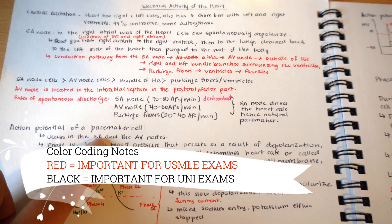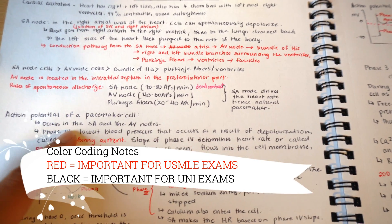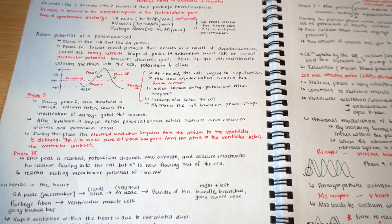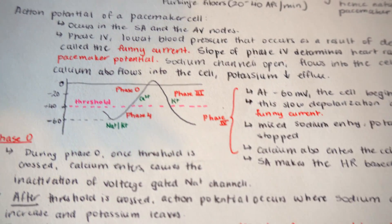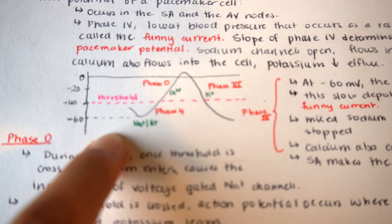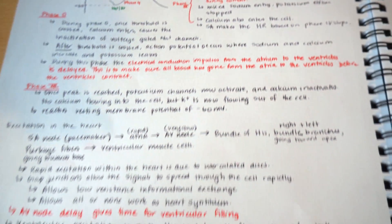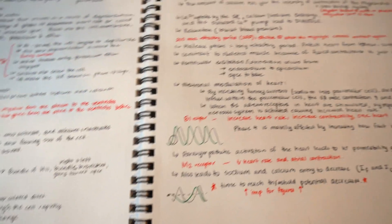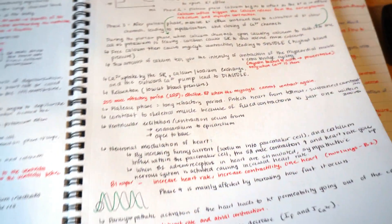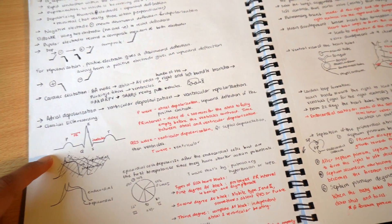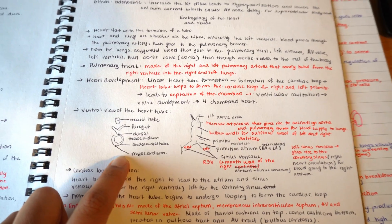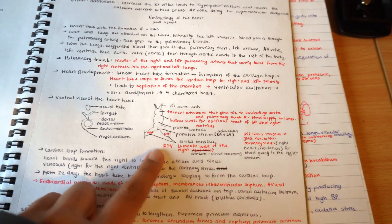Everything I wrote in black was what my professors had covered on their lecture slides. I preferred writing my own notes because it let me draw figures whenever I needed to. For example, for the action potential of pacemaker cells, I could color-code and draw each phase, label them, and write my own notes. I also found it really useful for drawing QRS waves and ECG recordings, and even during the embryological parts of cardiology I was able to draw and label them.